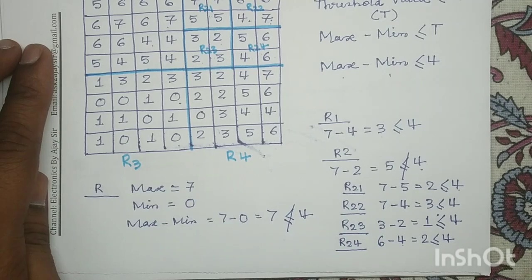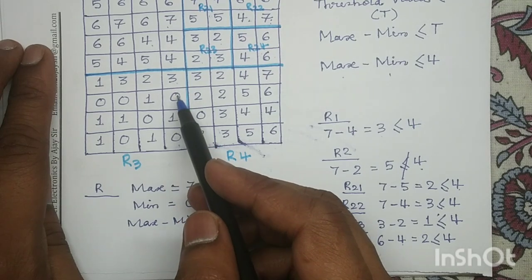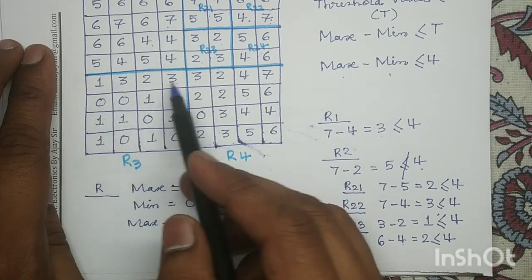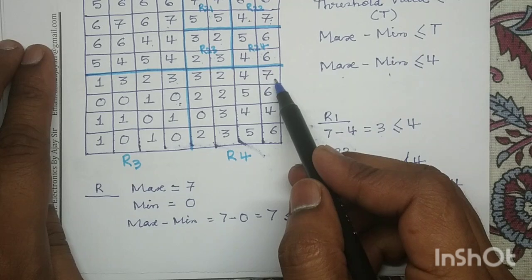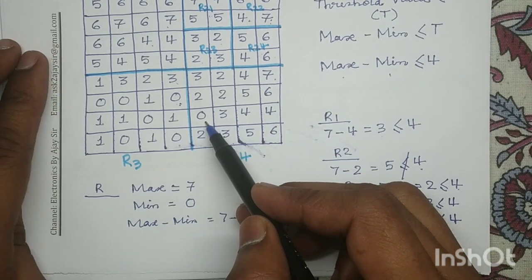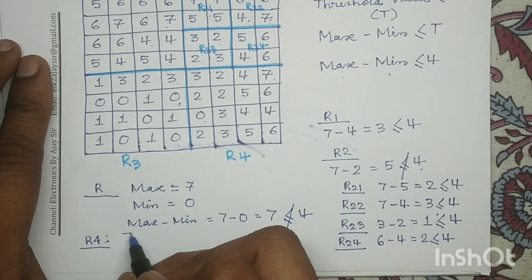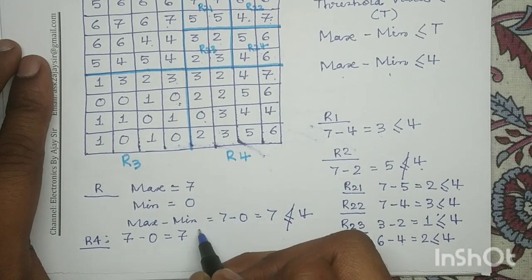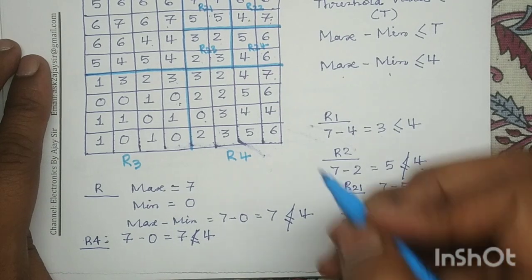Next we check R3. For R3, the maximum value is 3 and the minimum value is 0. So 3 minus 0 equals 3, which is less than or equal to 4. It satisfies the homogeneity condition, so we will not split R3. Next, for region R4, the maximum value is 7 and the minimum value is 0. The difference is 7, which is not less than or equal to 4. It does not satisfy the homogeneity condition, so we will split R4 into 4 quadrants.